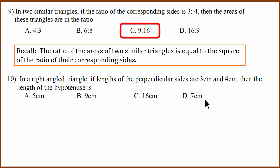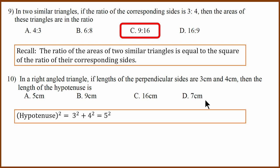Tenth question: in a right-angle triangle, if the lengths of the perpendicular sides are 3 and 4, find the hypotenuse. Using Pythagoras theorem, hypotenuse squared equals 3 squared plus 4 squared. Simplifying gives 5 squared, which means the hypotenuse is 5 centimeters.